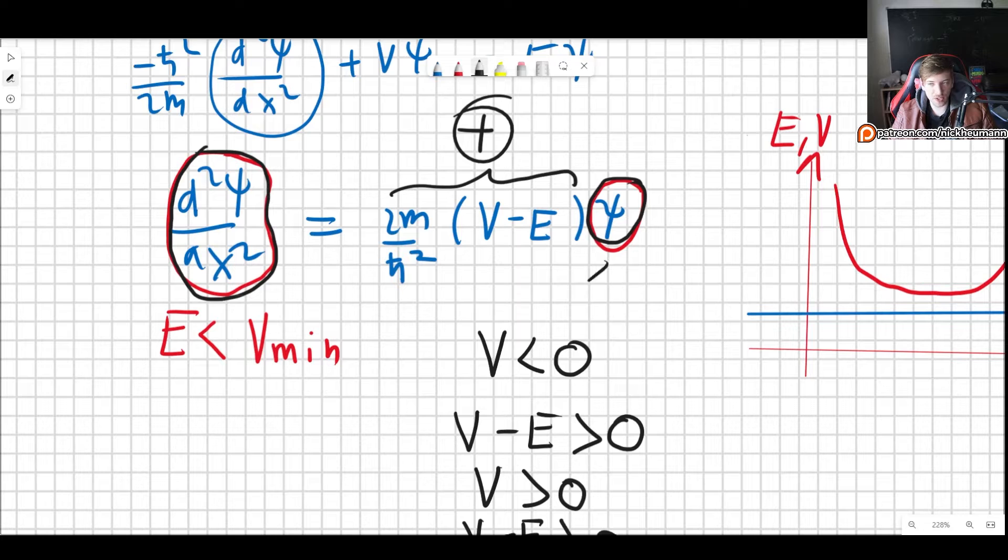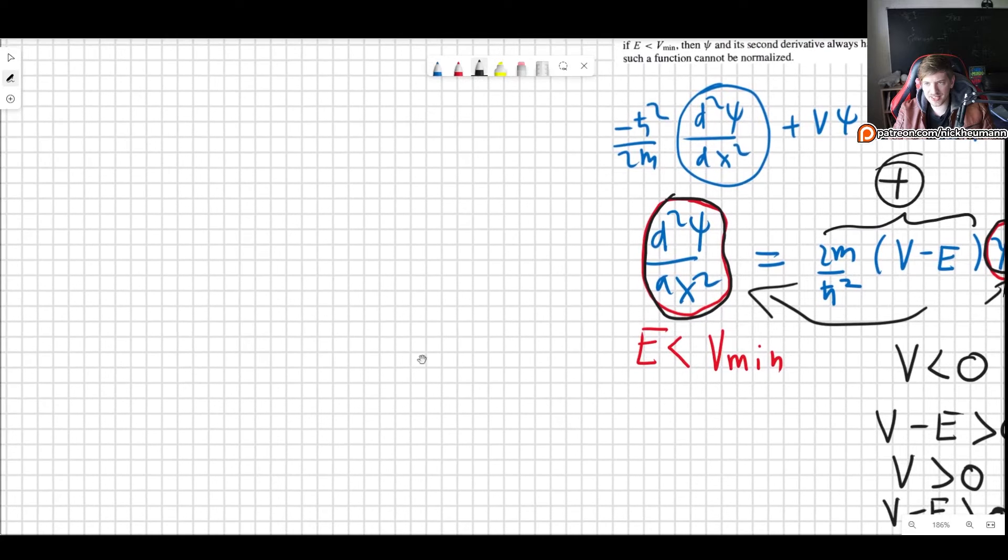And what that means is that if the wave function is positive, then the second derivative will also be positive because this cannot change its sign. And in the other case, if the wave function is negative, so will be the second derivative.